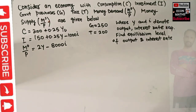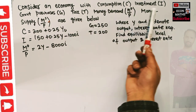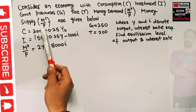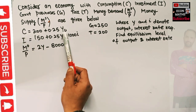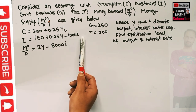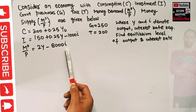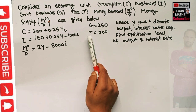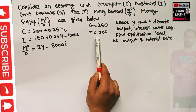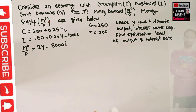In this video we will solve a problem on the IS-LM model. The question considers an economy with consumption, investment, government purchases, tax, money demand, and money supply given as follows: C = 200 + 0.25 Y_D, where Y_D denotes disposable income. Investment is a positive function of income and negative function of rate of interest. Government purchases are 250 and total taxes are 200, where Y and I denote output and interest rate respectively. We need to find the equilibrium level of output and interest rate.